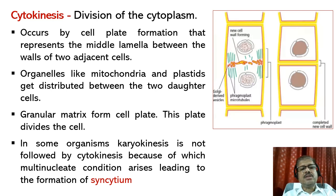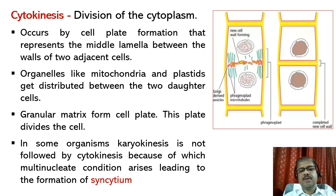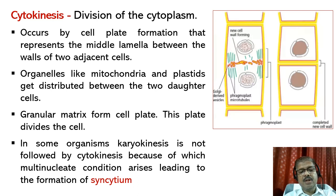Cytokinesis is the division of the cytoplasm. In plant cells, cytokinesis occurs by cell plate formation, which represents the middle lamella between the walls of two adjacent cells. At the time of cytoplasmic division, organelles like mitochondria and plastids get distributed between the two daughter cells. This granular matrix forms the cell plate, which divides the cell, and by the end of telophase cytokinesis is completed. In some organisms, karyokinesis is not followed by cytokinesis, resulting in a multinucleate condition — for example, liquid endosperm in coconut.